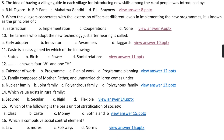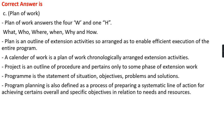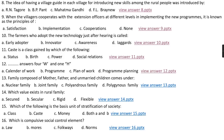Question number twelve: What answers the four W's and one H? Option A, calendar of work; option B, program; option C, plan of work; option D, program planning. The right answer is option C, that is plan of work. Plan of work answers the four W's — what, who, where, when, why — and how. It is an outline of all extension activities arranged to enable efficient execution of the program. A calendar of work is a plan of work with chronologically arranged extension activities. A project is an outline of procedures pertaining only to some phase of extension work. A program is a statement of situation, objectives, problems, and solutions. Program planning is a process of preparing a systematic line of action for achieving overall and specific objectives in relation to needs and resources.